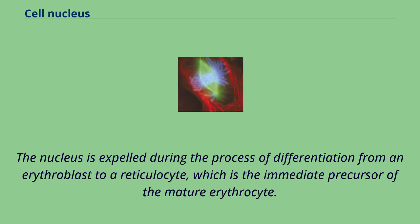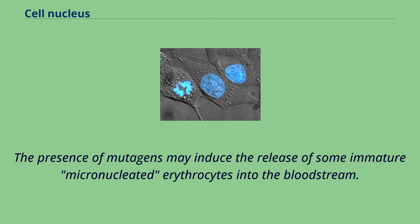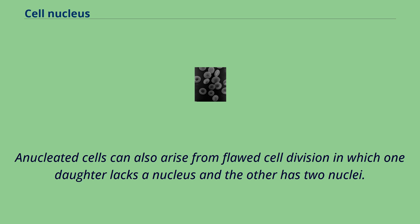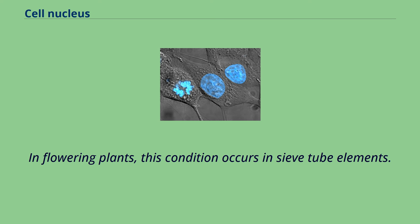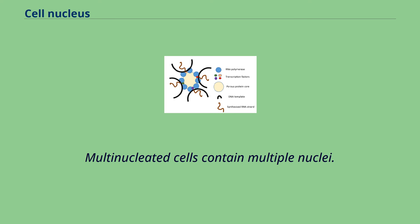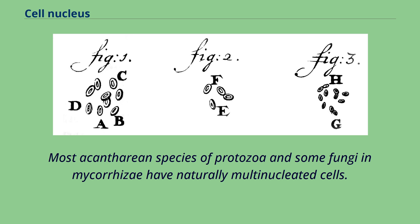The presence of mutagens may induce the release of some immature micronucleated erythrocytes into the bloodstream. Enucleated cells can also arise from flawed cell division in which one daughter lacks a nucleus and the other has two nuclei. In flowering plants, this condition occurs in sieve tube elements. Multinucleated cells contain multiple nuclei.